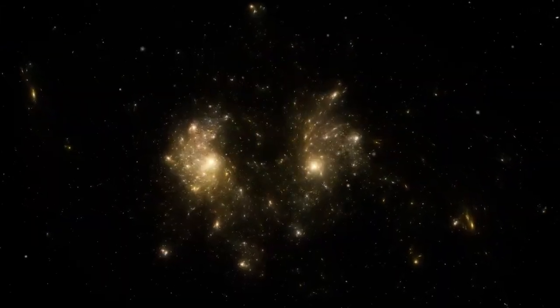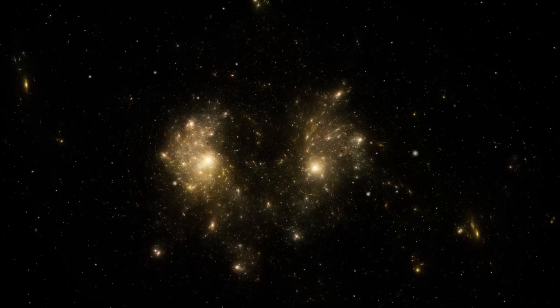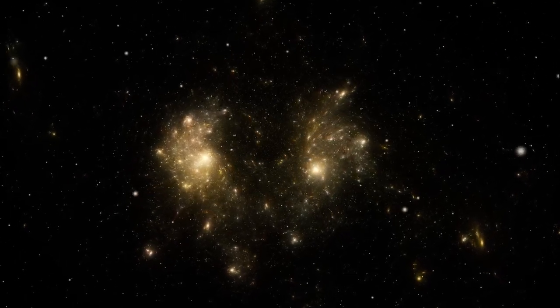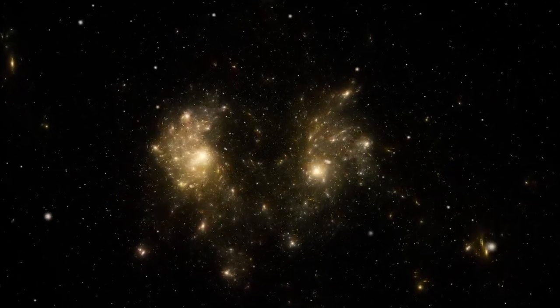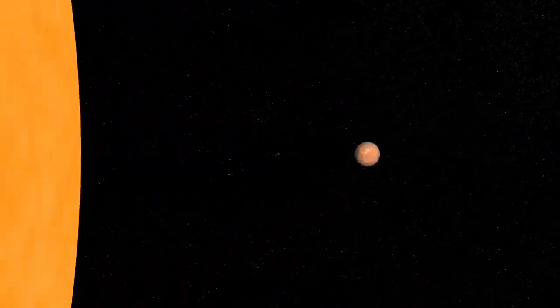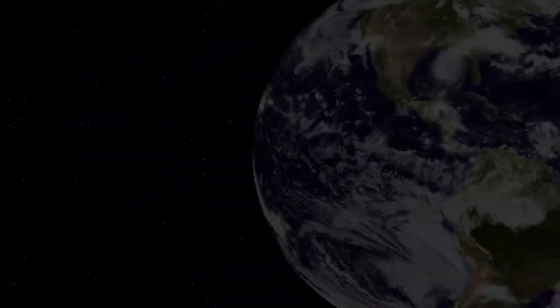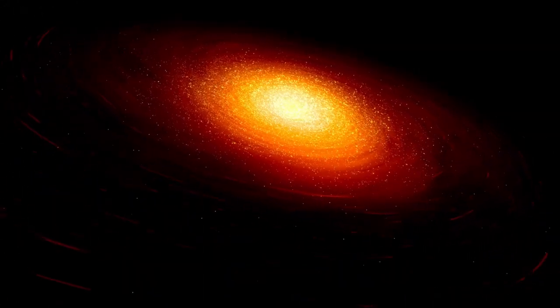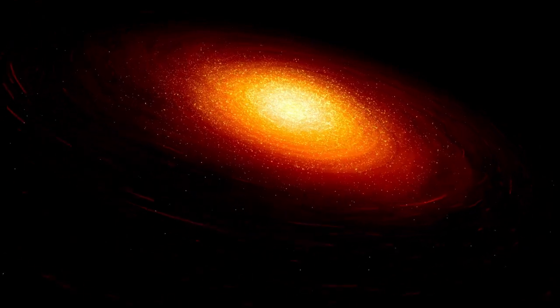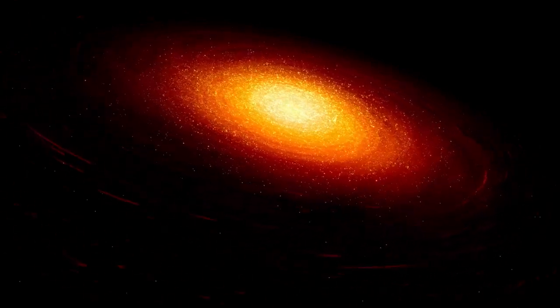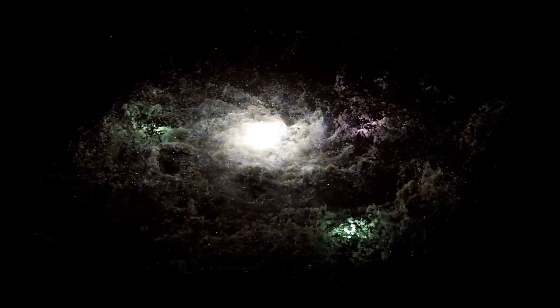When NASA's team directed the James Webb Space Telescope toward Jupiter, their goal wasn't to create viral photos or generate public excitement. Instead, they were pushing the limits of one of humanity's most advanced scientific instruments. Imaging Jupiter is notoriously challenging in the infrared spectrum. The planet is incredibly bright, moves swiftly across the sky, and is surrounded by starkly contrasting elements like rings and moons. This made it a worst-case scenario for Webb's sensitive optics.